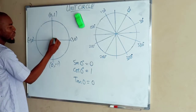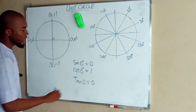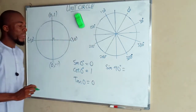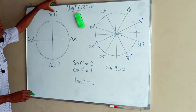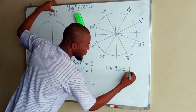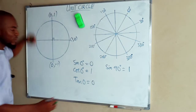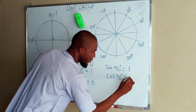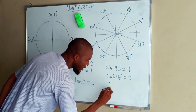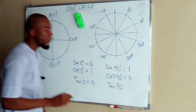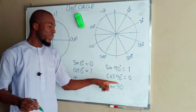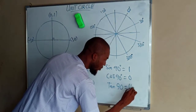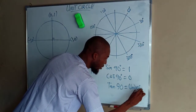Moving on to 90°: sin 90° depends on the y-axis, where y is positive 1. So sin 90° = 1. And cos 90° equals the corresponding value of x, which is 0. To obtain tan 90°, we say sin divided by cos, which is 1 divided by 0. Since 1 divided by 0 is undefined, tan 90° is undefined.